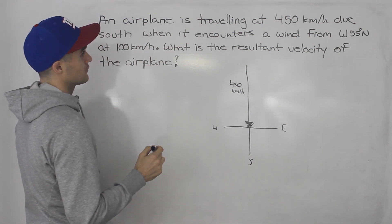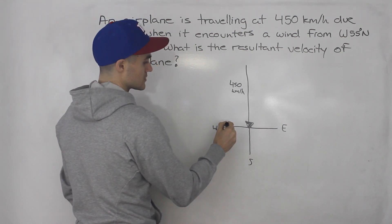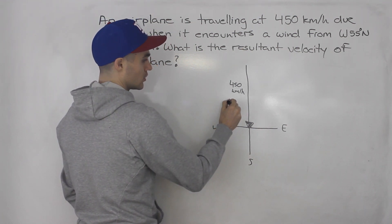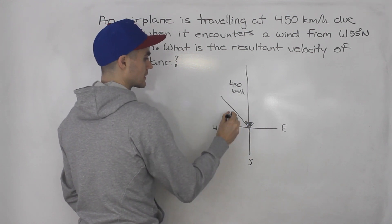Now this wind is coming from west 55 degrees north. Where is west 55 degrees north? If we start west, go north 55 degrees, something like that.